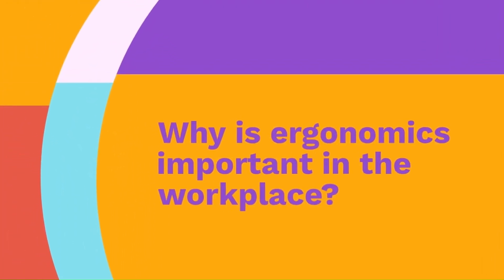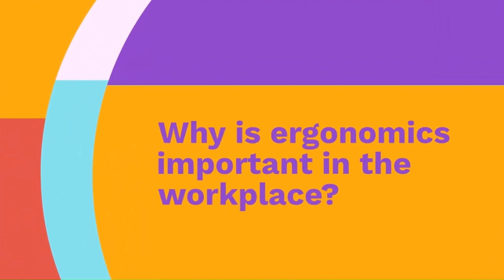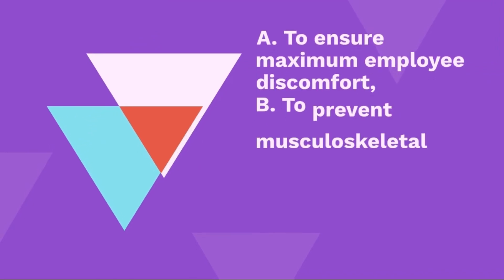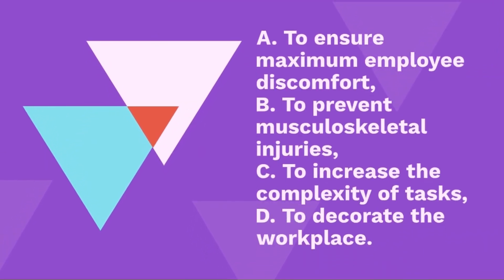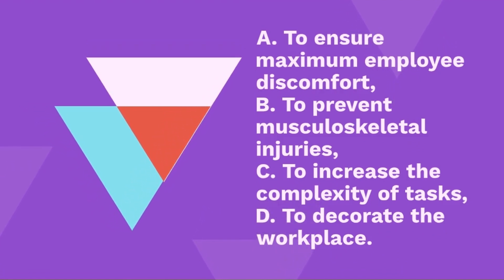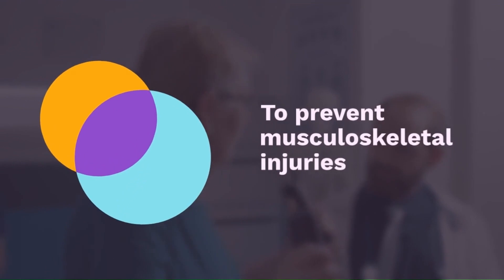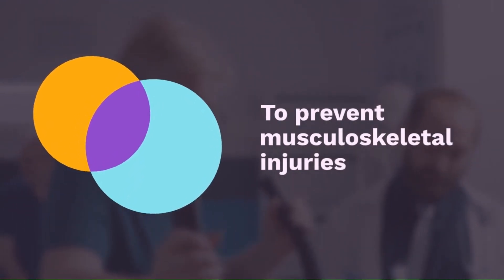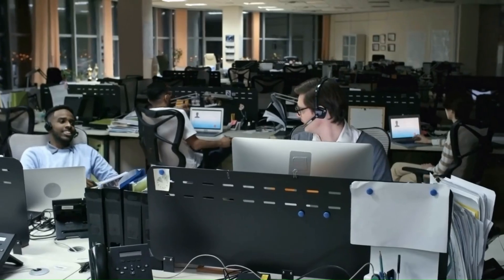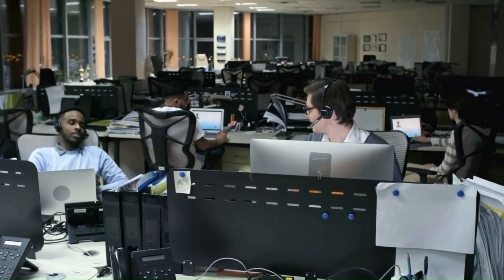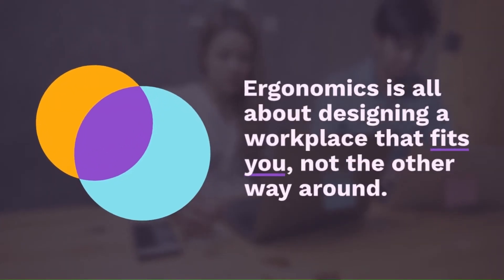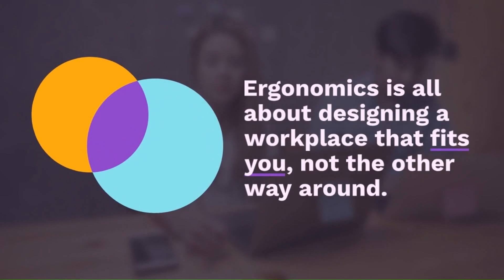Question 14: Why is ergonomics important in the workplace? The options are: A — to ensure maximum employer discomfort, B — to prevent musculoskeletal injuries, C — to increase the complexity of tasks, D — to decorate the workplace. The answer is to prevent musculoskeletal injuries. Ergonomics is about setting up your workplace so it's comfortable and does not cause injuries, like adjusting your chair so you don't strain your back. Ergonomics is about designing a workplace that fits you, not the other way around.